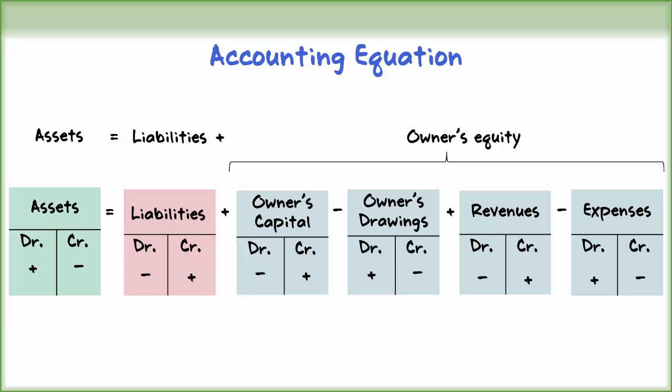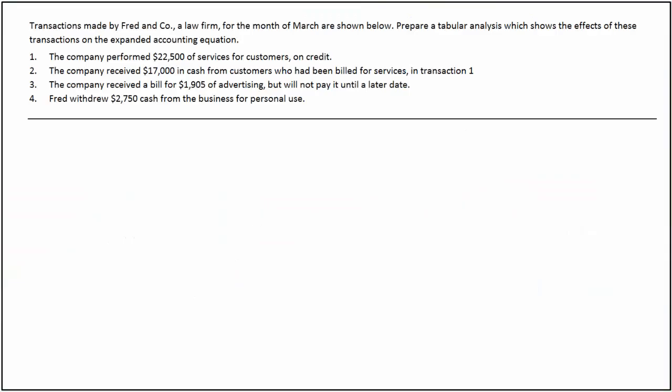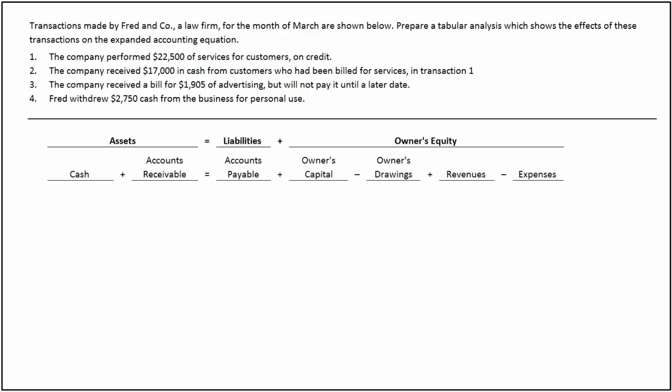In tabular analysis of transactions, each transaction is analyzed in terms of its effect on the three components of the basic accounting equation and the specific items within each component. After recording each transaction, the two sides of the equation must always be equal. Let's look at a few transactions to see how to prepare a tabular analysis of transactions. Transactions made by Fred and Company, a law firm, for the month of March are given. We will show the effects of these transactions on the expanded accounting equation in a tabular form.